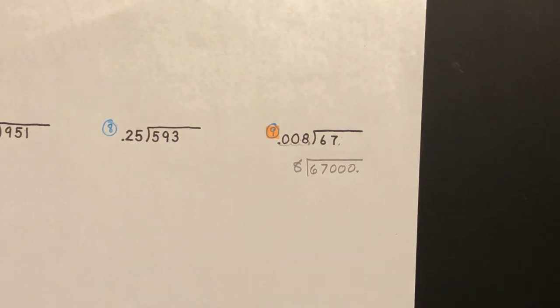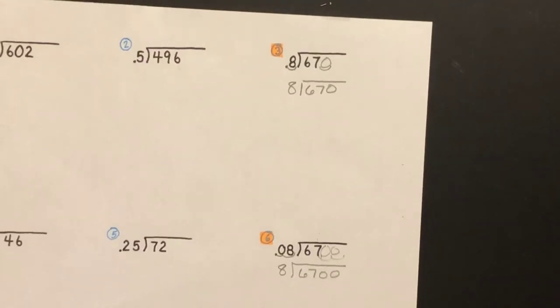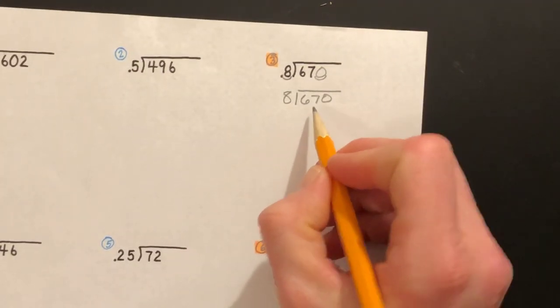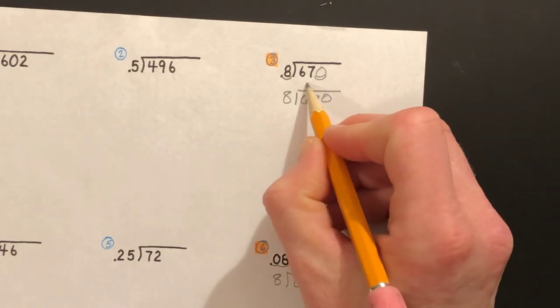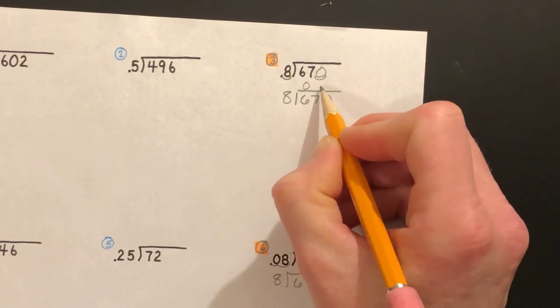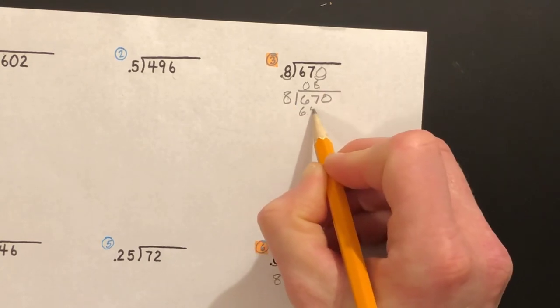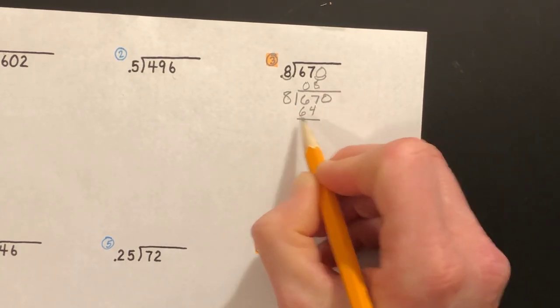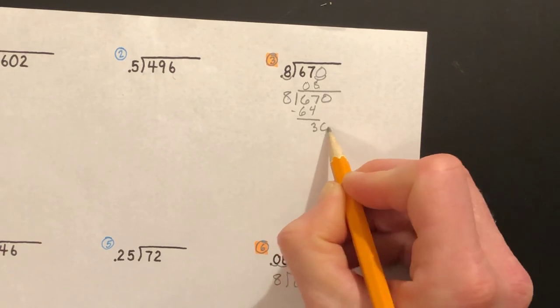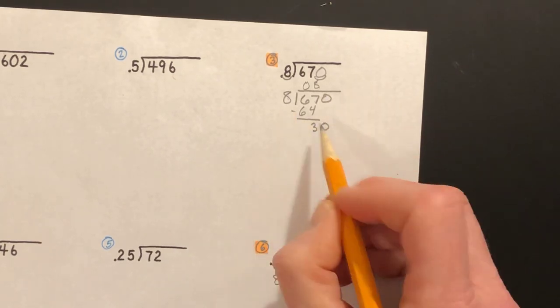We'll do the first one together. Eight goes into 67... well, eight goes into six zero times. It goes into 67 eight times. Eight times eight is 64. Subtract, you get 30. Eight goes into 30...